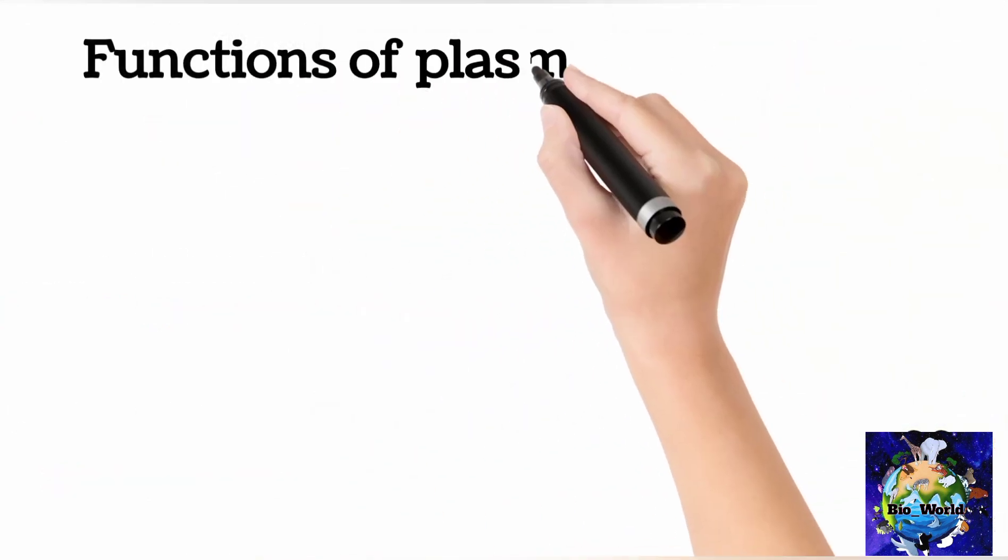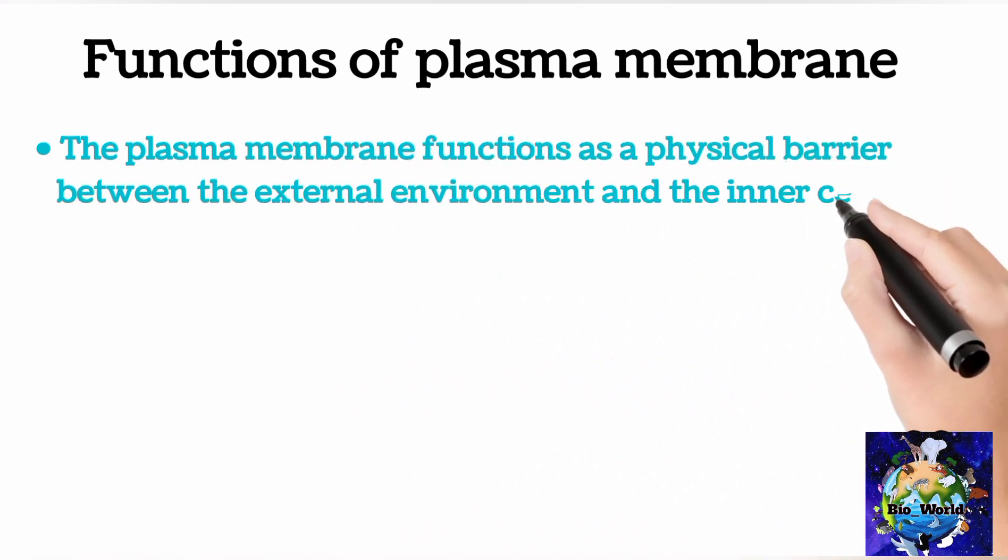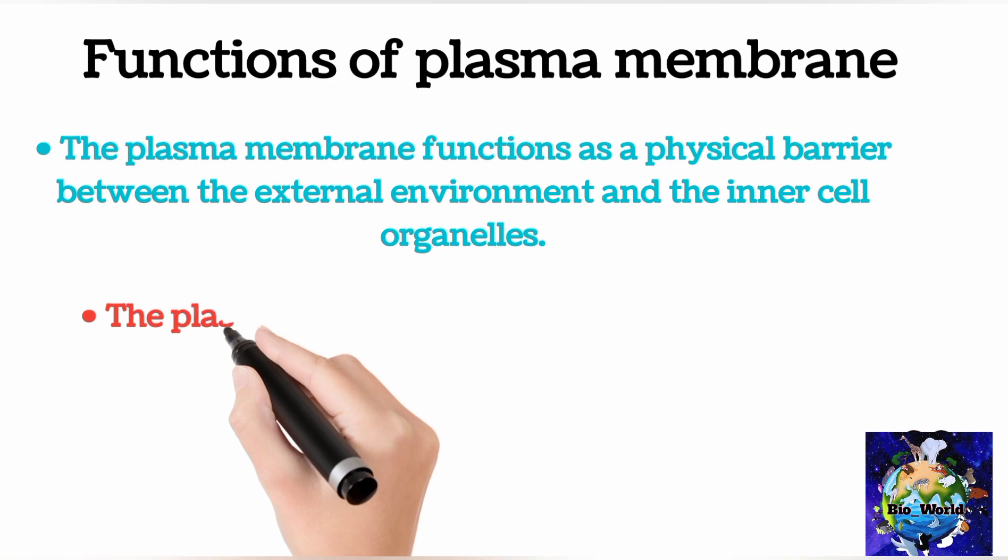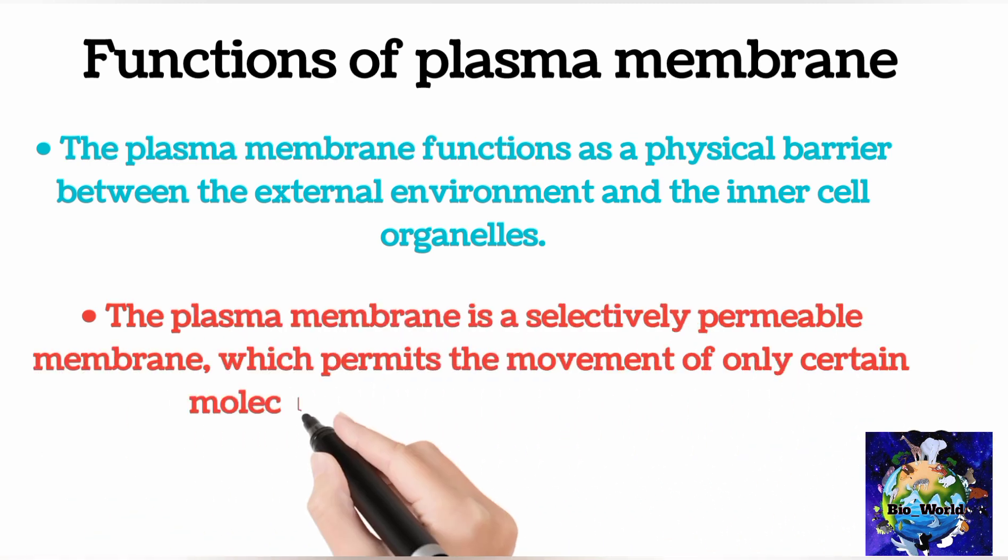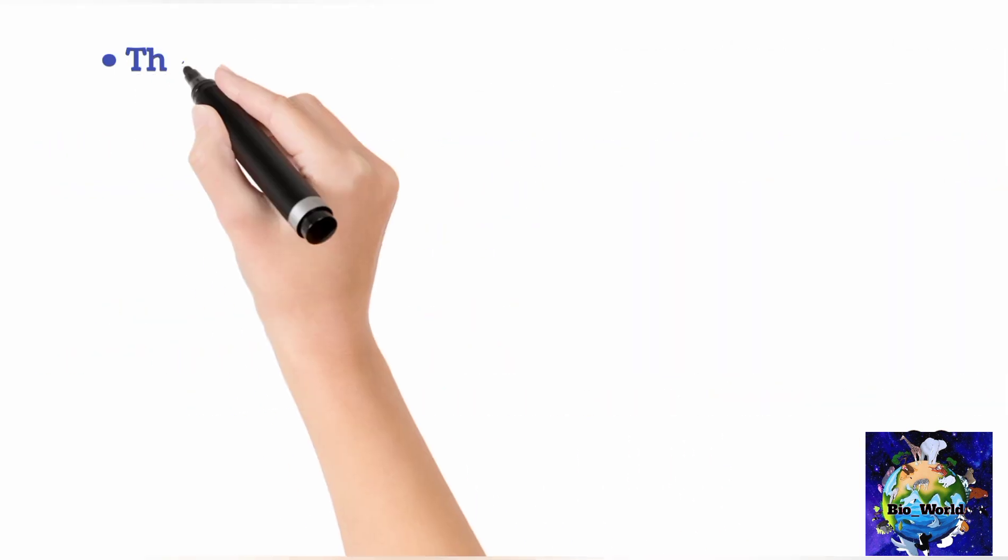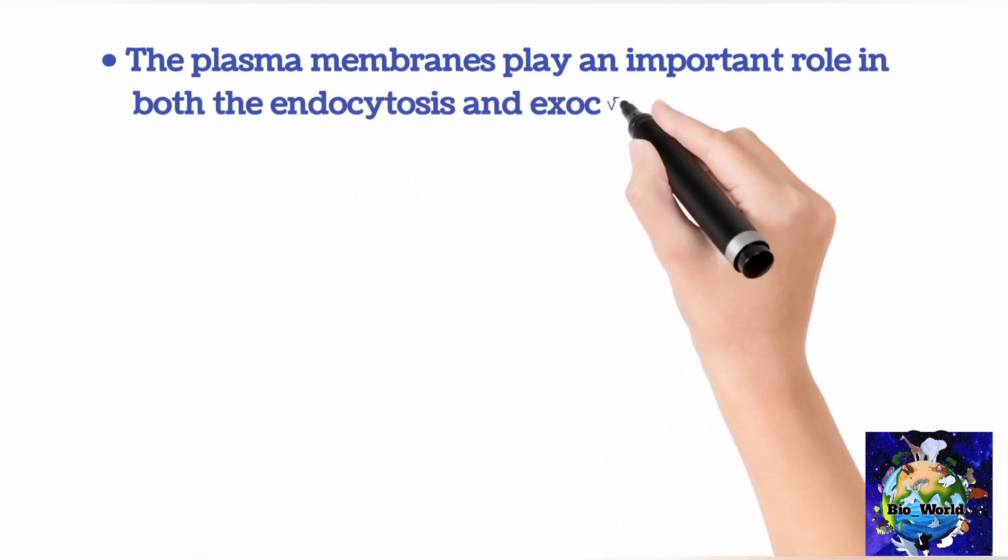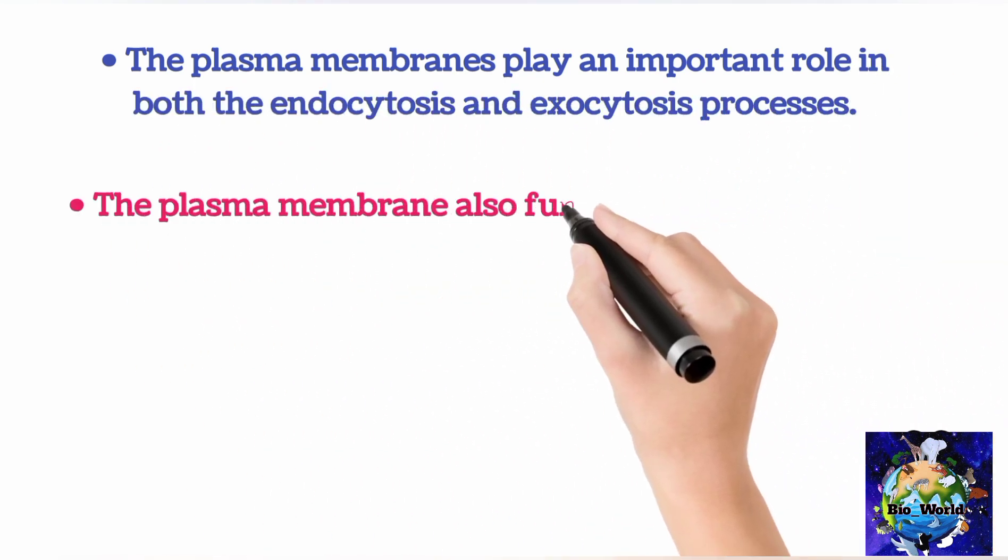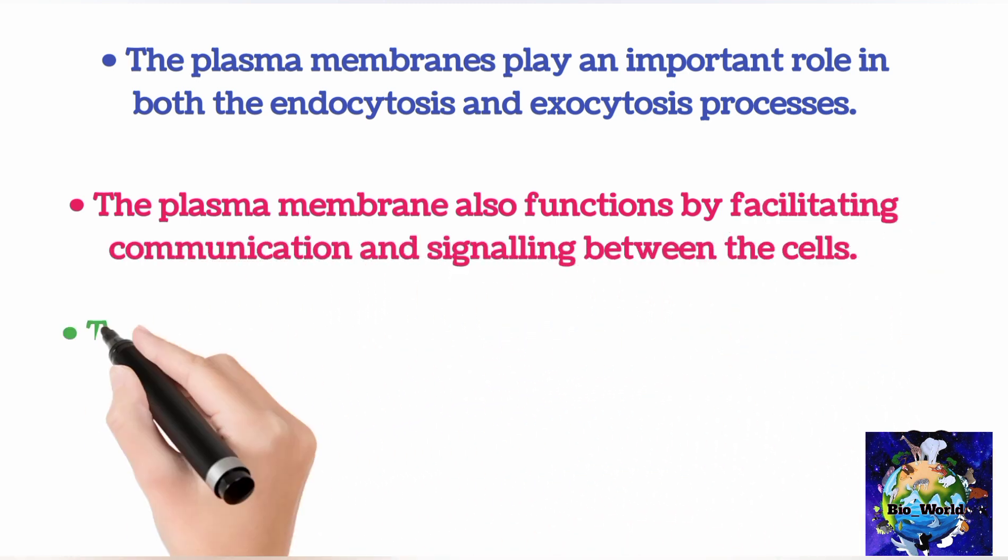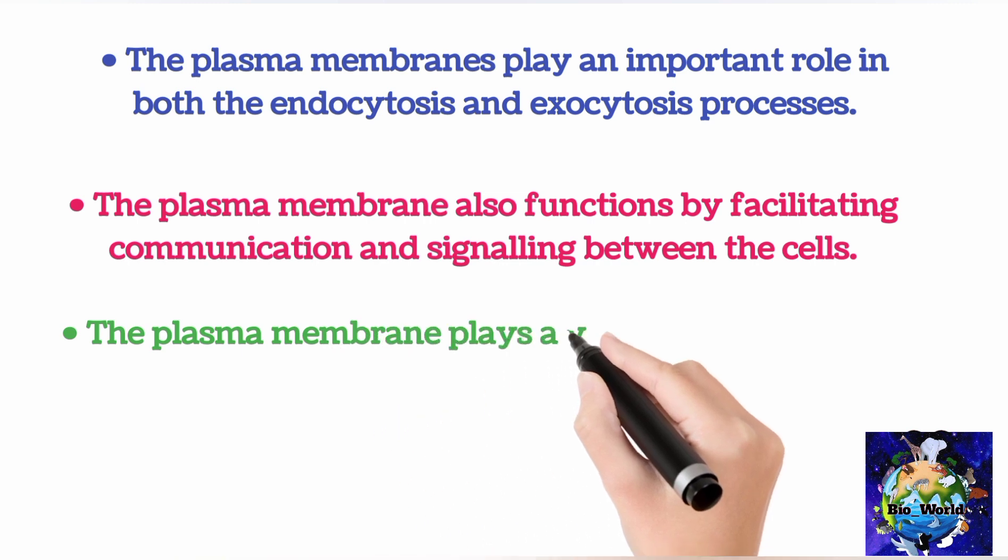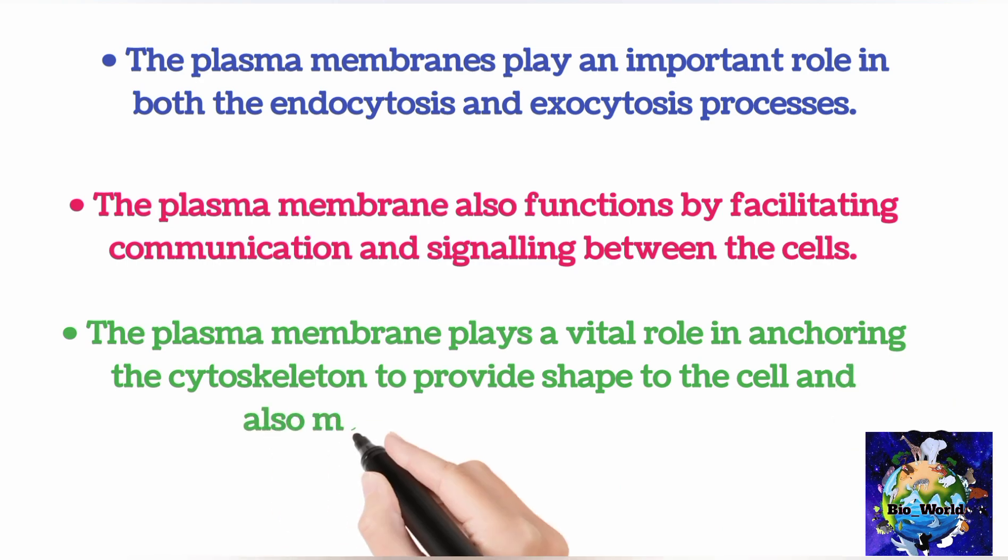The plasma membrane functions as a physical barrier between the external environment and the inner cell organelles. The plasma membrane is a selectively permeable membrane, which permits the movement of only certain molecules both in and out of the cell. The plasma membranes play an important role in both the endocytosis and exocytosis processes. The plasma membrane also functions by facilitating communication and signaling between the cells. The plasma membrane plays a vital role in anchoring the cytoskeleton to provide shape to the cell and also maintain the cell potential.